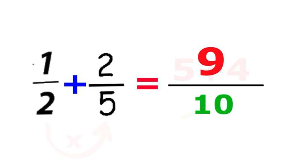There you have it. One-half plus two-fifths equals nine over ten. And that's the simplest way to add dissimilar fractions—fractions with different denominators.